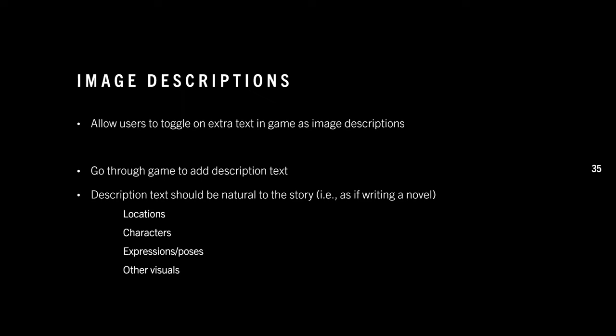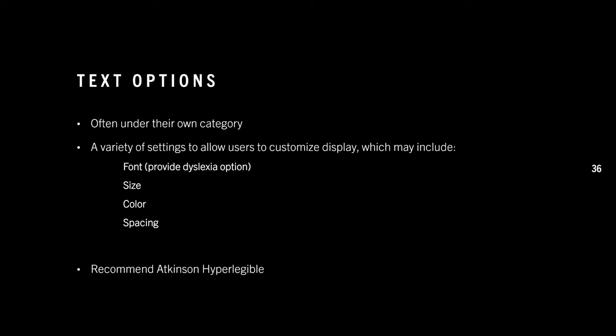My next recommendation for accessibility is image description — allowing users to toggle on extra text that describes things in the story like locations, character expressions, poses, and other visual elements on screen. The description text would be added in much like writing a novel, so users relying on these descriptions won't get a jarring experience of your visual novel's story.